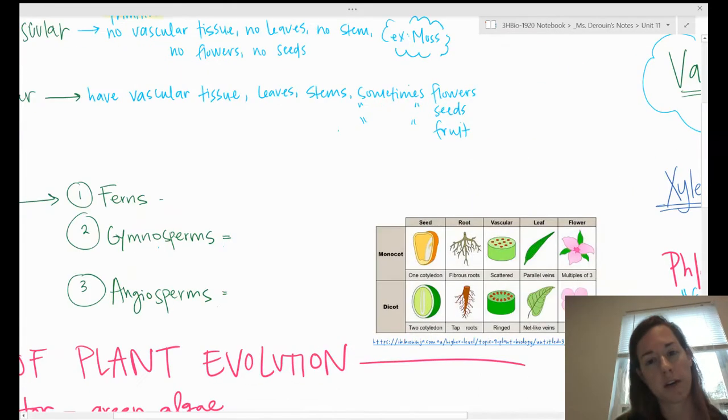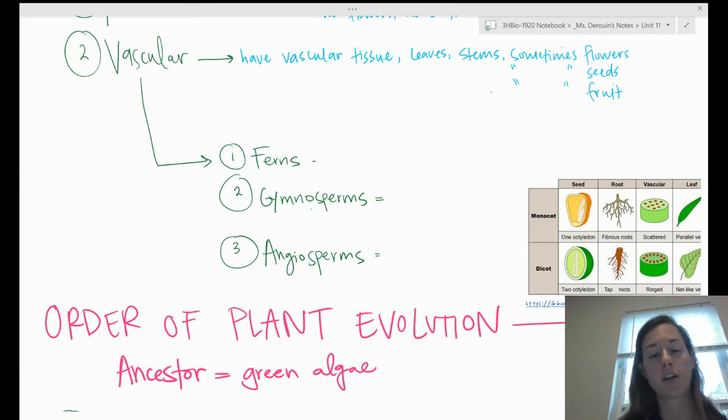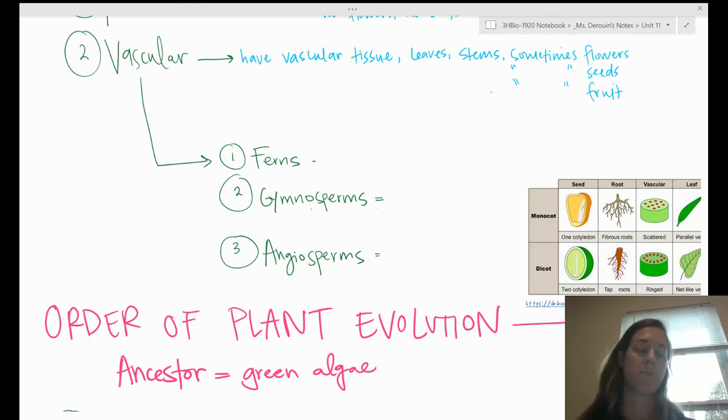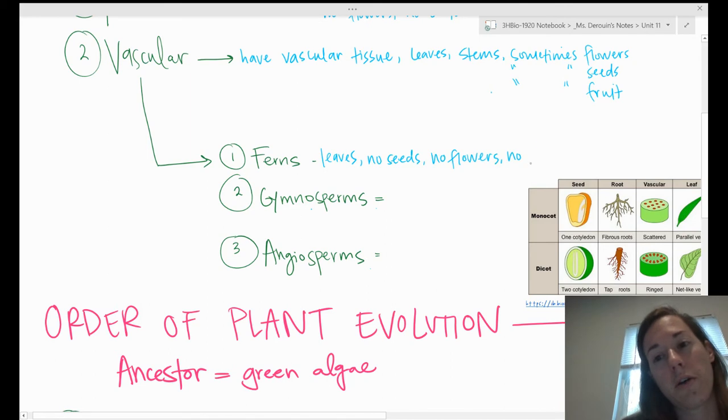Now let's talk about the different types of vascular plants. There's three types we're going to talk about: ferns, gymnosperms, and angiosperms. They go in order of increasing complexity and also in order of kind of when they showed up on earth. Ferns would be the most primitive of the vascular plants. Ferns have leaves but they have no seeds, no flowers, and no fruit.